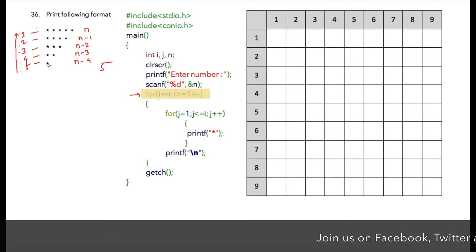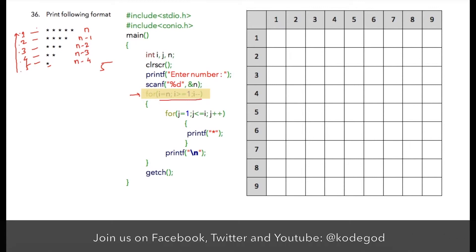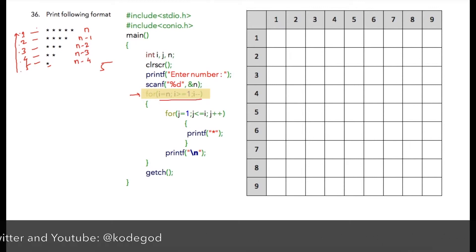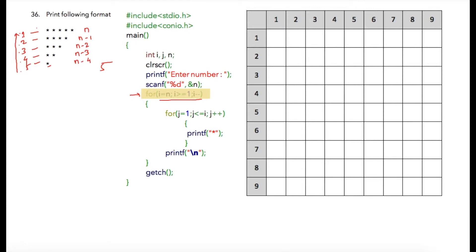In the first loop, we can use the loop in decrementing order — initialize i to n, check the condition while i is greater than or equal to one, and then decrement i by one using i minus minus. Inside the for loop, initialize j equal to one and loop j for i times, so the condition will be j less than or equal to i, then increment j with j plus plus.